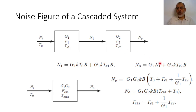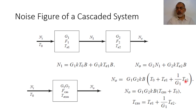By replacing N1 with its expression and taking the common factor G1·G2·K·B, the total output noise becomes G1·G2·K·B multiplied by the quantity T0 plus TE1 plus (1/G1)·TE2, where the 1/G1 factor compensates for the common factor extracted.